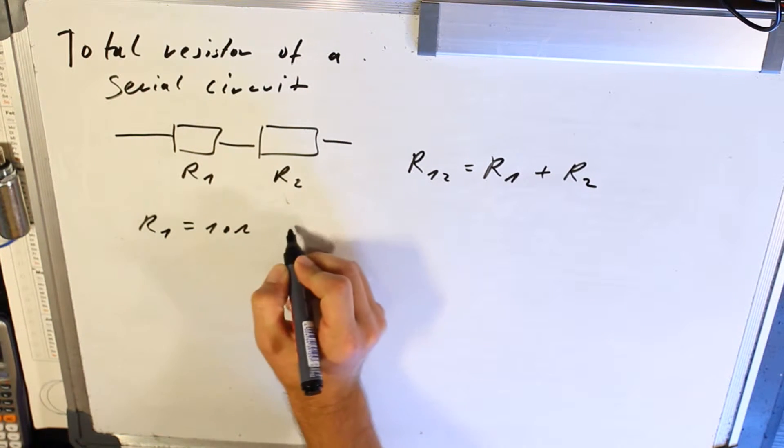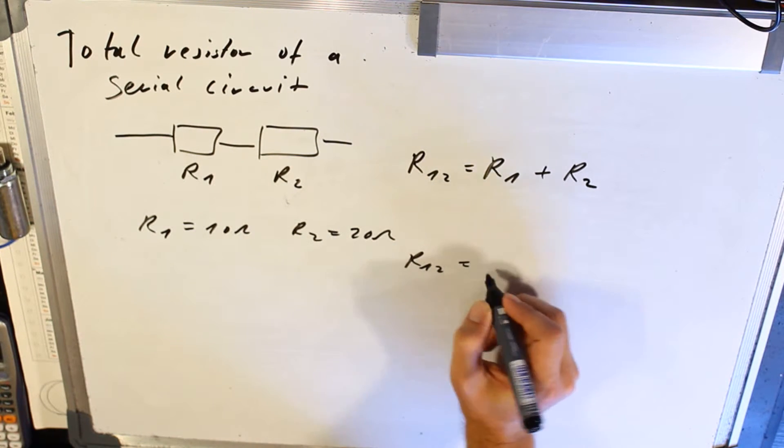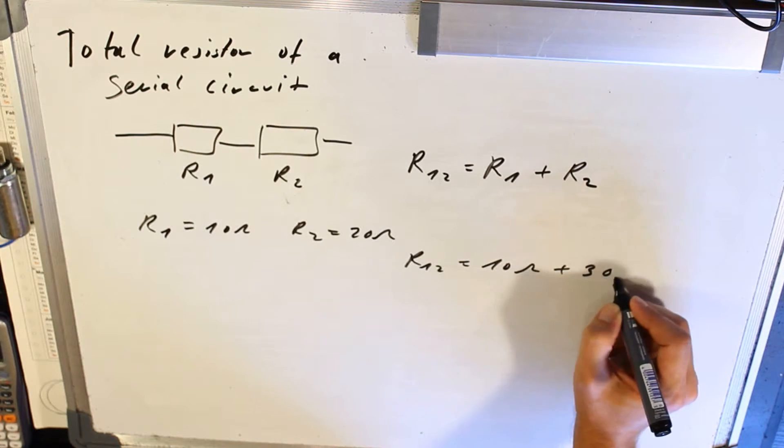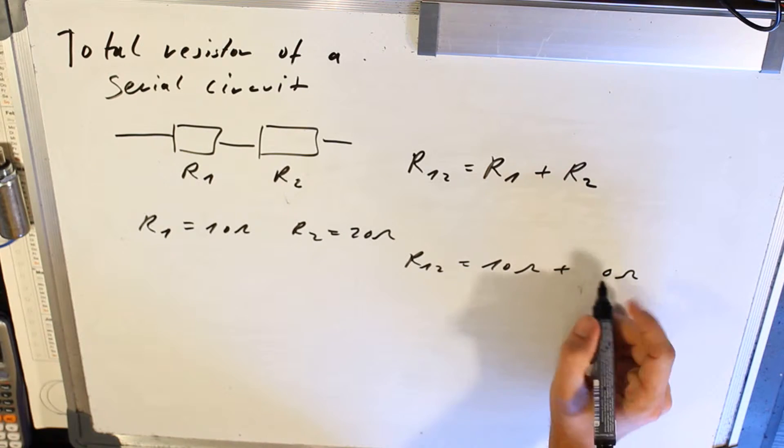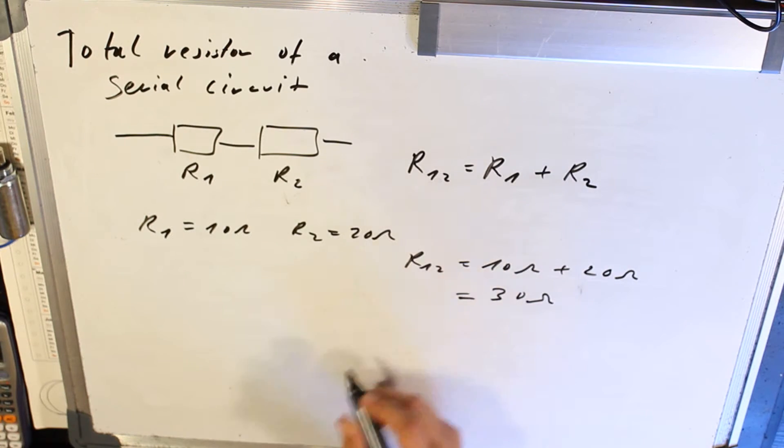R1 is 10 ohms. R2 is 20 ohms. So R12 is 10 ohms plus 20 ohms equals 30 ohms. That's it.